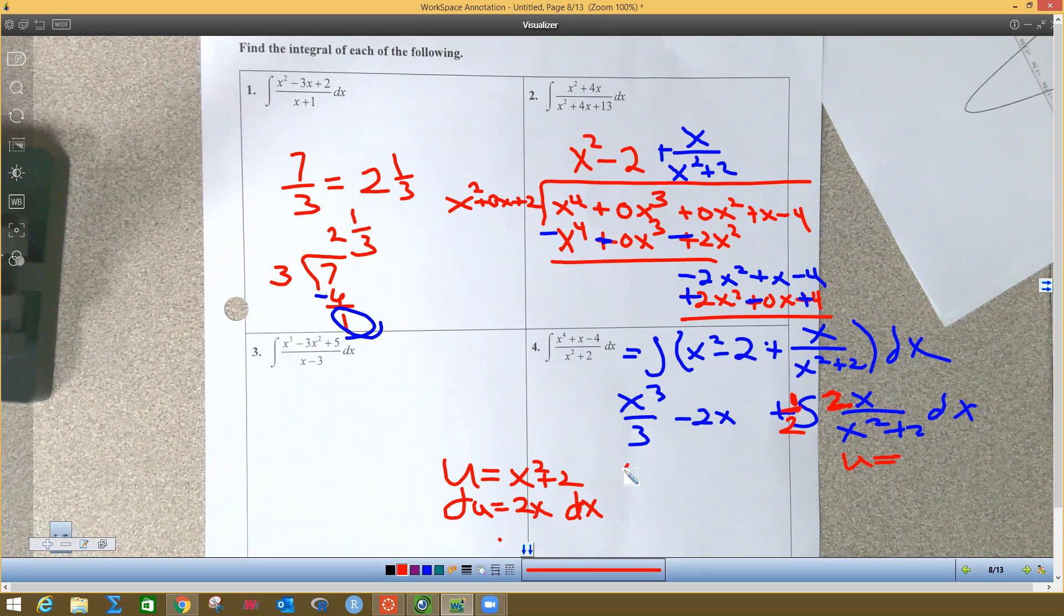So I still have the x cubed over three minus the two x, and then I got plus a half, and now I have the integral of one over u du. Now we have a rule for one over u du. That is natural log. The only time it becomes natural log is if this is a variable to the first power. Any other time you use power rule; you have to move it up and use power rule.